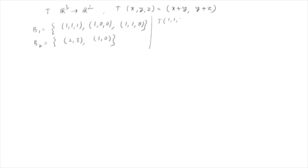T(1,1,1) from the formula is (2,2). Now we write (2,2) as a linear combination of the basis vectors (2,3) and (1,0). Taking (2/3)·(2,3) gives (4/3, 2) — we need (2, 2). Working it out, the coordinates with respect to B2 are 2/3 and 2/3.